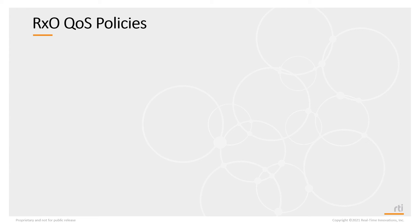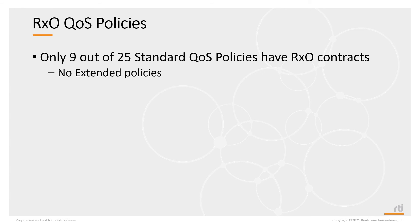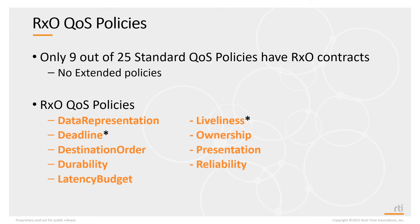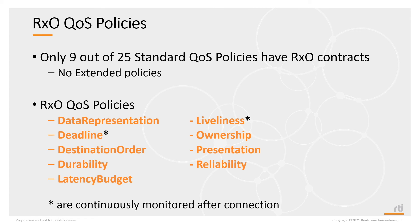Let's look at the RxO QoS policies in more detail. Only nine out of the 25 standard QoS policies have RxO contracts, and none of the extended QoS policies have RxO implications. These nine QoS policies must be set compatibly between the sending and receiving application in order for DDS to allow a connection between the two. Of these nine, two — deadline and liveliness — are continuously monitored to make sure the RxO contract is maintained throughout operation.